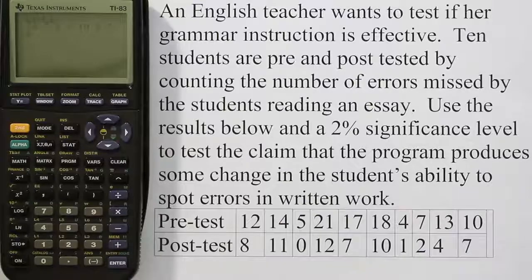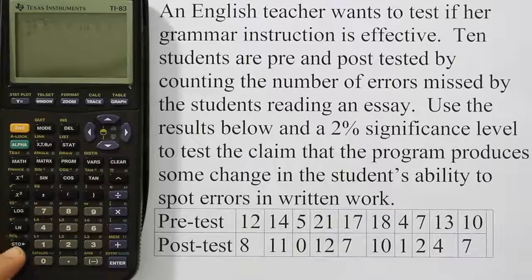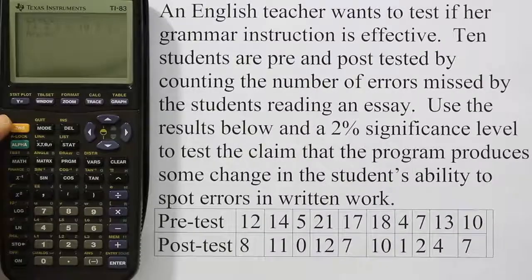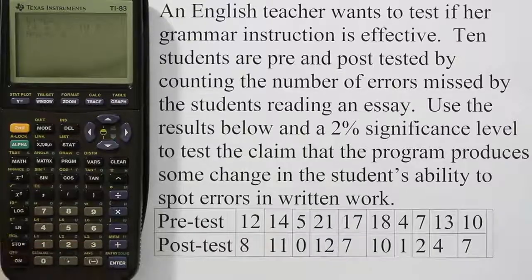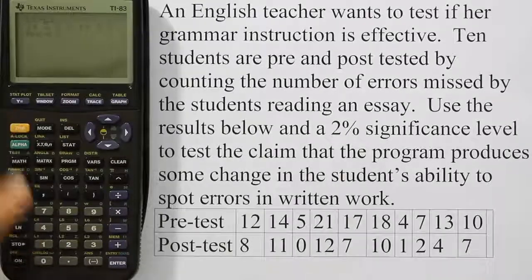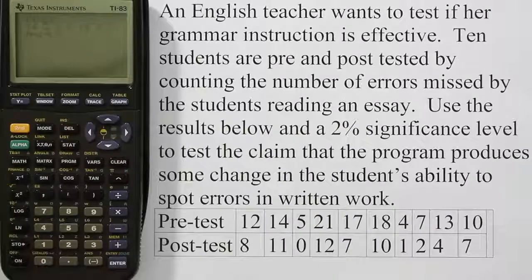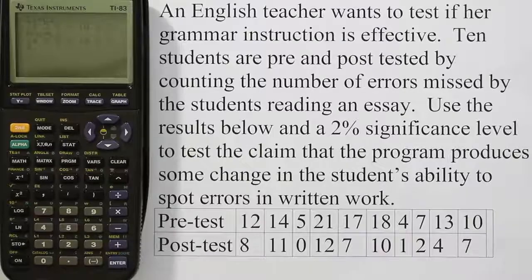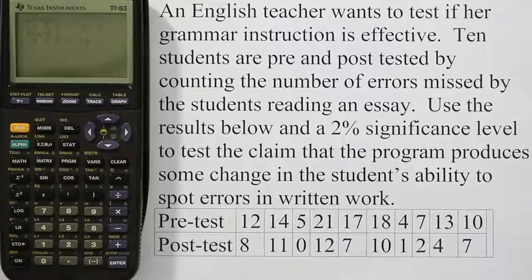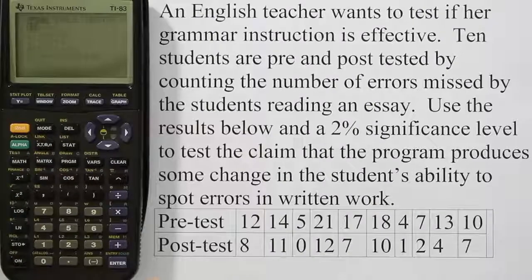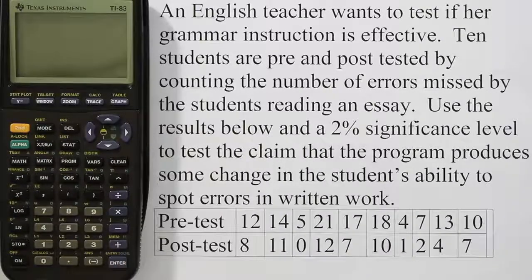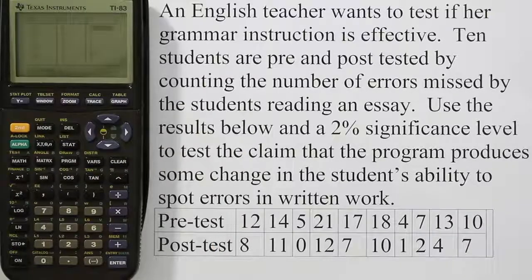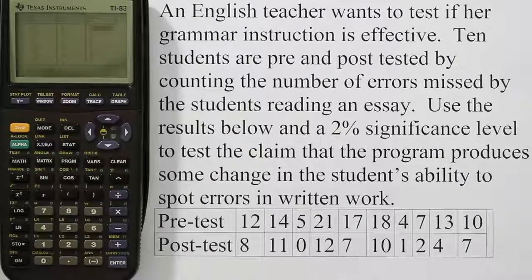Now what you want to do is you want to store that into list 3. So we're going to hit the store key right above the on key. Hit store and we're going to hit second and the number 3 because that's where list 3 is located. You always have to hit second to get the list for that key. Now you hit enter and your answers that you just got for that subtraction are stored in a list. You can check that by hitting the stat key and we're going to go edit again. You can see that list 3 now has all the differences and you can confirm that all those differences are in fact correct. Once you've done that, now it's time to do the test.